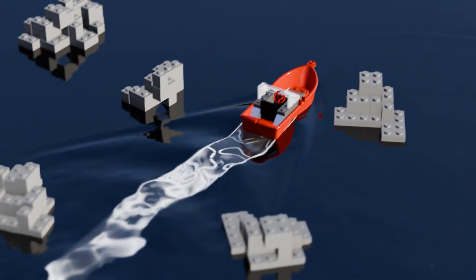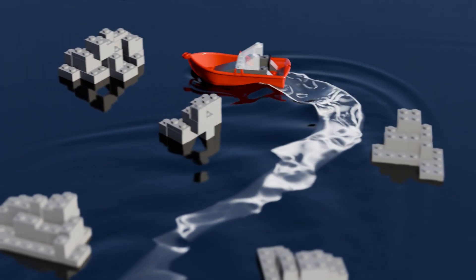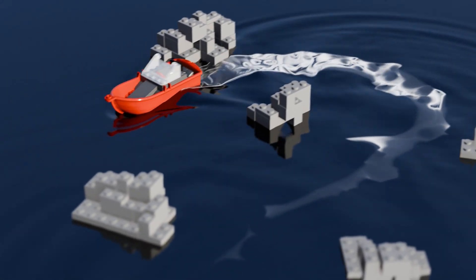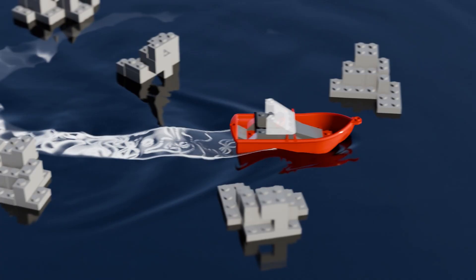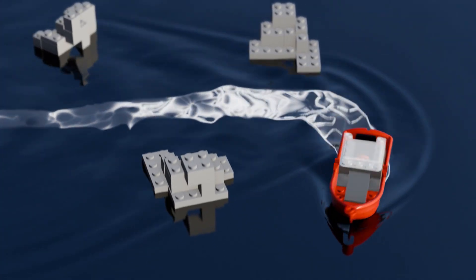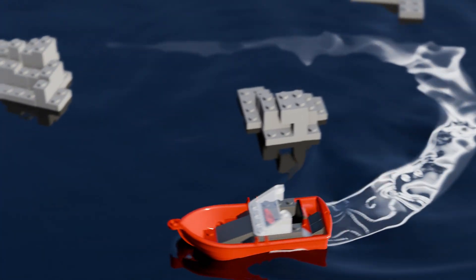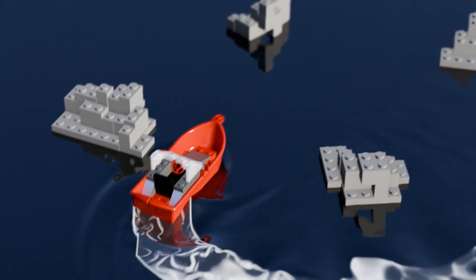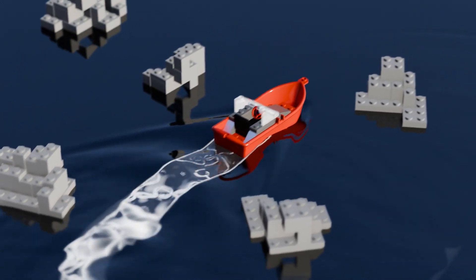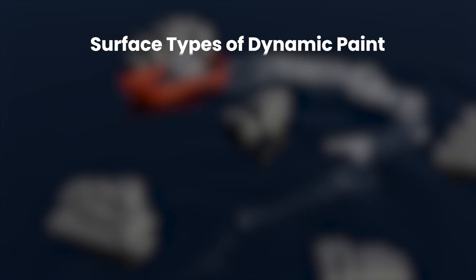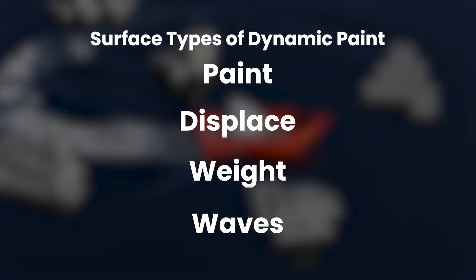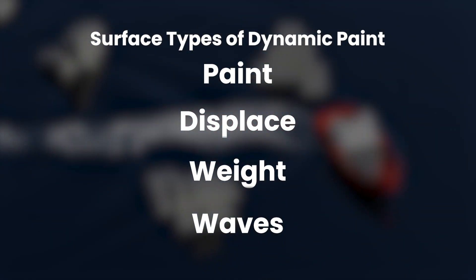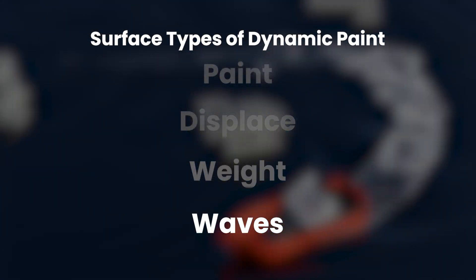Hello everyone and welcome to another Blender Made Easy tutorial. Today we're going to be creating a really nice Lego boat animation. This is the fourth video in the Dynamic Paint series where we're taking a look at each different surface type. Last week we looked at weight and now this week we're taking a look at waves.